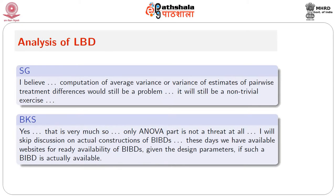The computation of average variance or variance of estimates of pairwise treatment differences will still be a non-trivial exercise. Only the ANOVA part is not a threat. Since this is a linked block design, the block sum of squares in this design is nothing but the treatment sum of squares in a BIBD. Therefore, block sum of squares adjusted can be immediately computed. Then you can get the treatment sum of squares adjusted and compute the F-ratio for testing equality of treatment effects. But for average variance computation, you have to go to the C matrix.